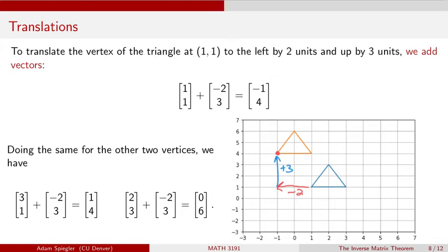So translation acts differently than say scaling and shearing and rotations in that those transformations we could represent with matrix multiplication. And so when we wanted to compose those operations, we could just multiply the corresponding matrices. Translation acts as vector addition. And so we're going to have to be a little bit more sneaky about how we incorporate translations in with the other transformations we've been discussing.